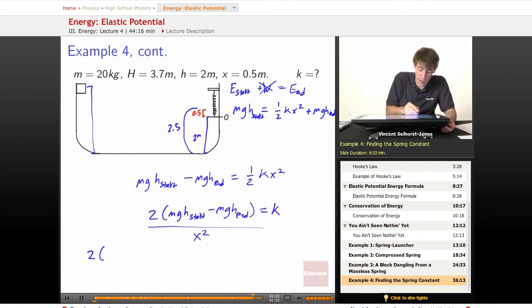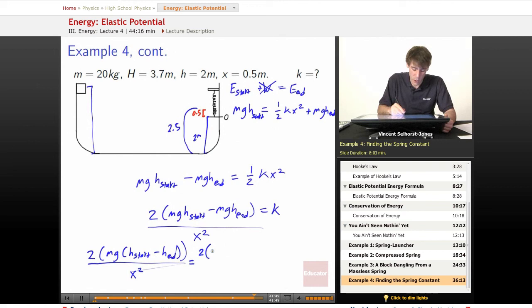In fact, we can make it even a little bit easier by pulling out the mg, h start minus h end, right? Over x squared is equal to 2 times what's m, 20, what's g, 9.8 times what's h at the start, 3.7,